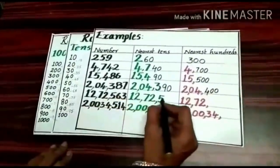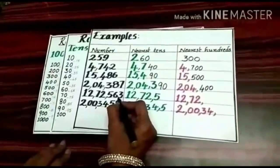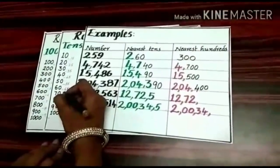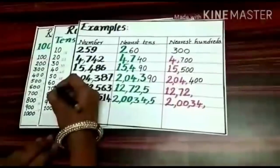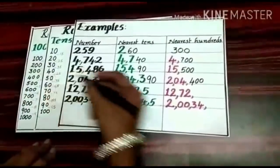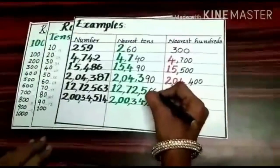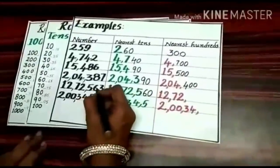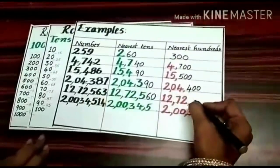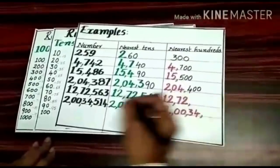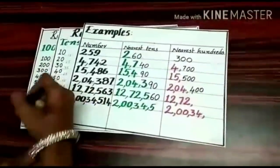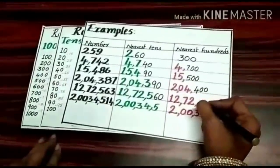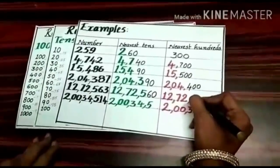In this example, round off 63 to the nearest 10s: 63 lies between 60 and 70, and 63 is less than the middle number, so round down to the before 10 — that is 60. Now round off 563 to the nearest 100: 563 lies between 500 and 600, and it is more than the middle number, so round up to the next 100 — that is 600.